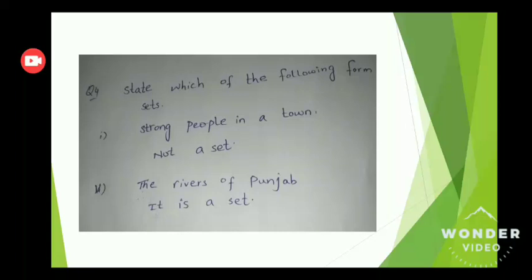Question number 4: state which of the following form sets. Number 1 — 'strong people in a town' — it is not a set, because when you collect data of strong people, every person may not agree on who counts as strong, so it is not well-defined. Part 5 — 'the rivers of Punjab' — it is a set, because every person would agree on the names of the rivers of Punjab, so it is well-defined.